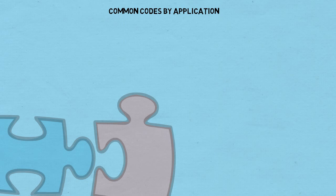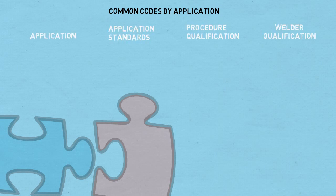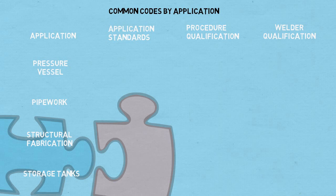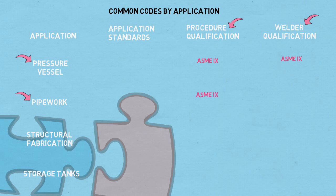In summary, these codes and standards may be arranged according to each specific application and intended use. If the job concerns pressure vessels, the suggested code to qualify the procedure and welder is ASME Section 9. Similarly, if the job concerns piping work, ASME Section 9 is used for both procedure and welder qualification. For storage tanks, ASME Section 9 covers welder qualification. When looking at structural fabrication, AWS D1.1 covers all aspects — the application standard, procedure qualification, and welder qualification.